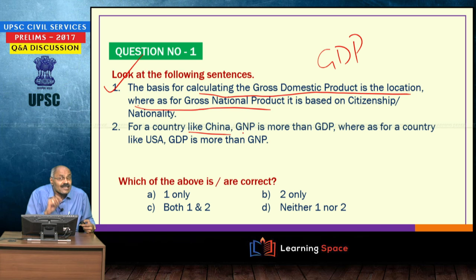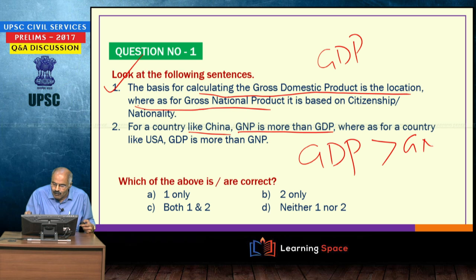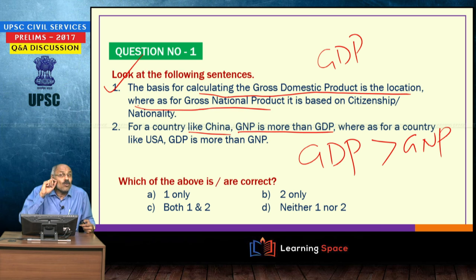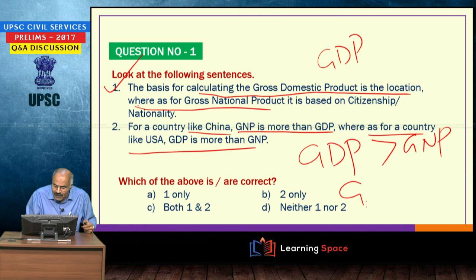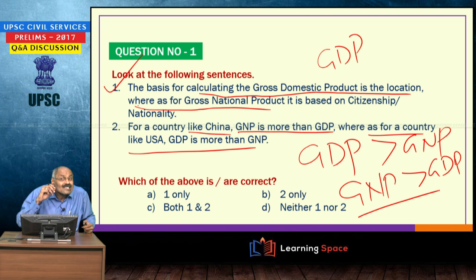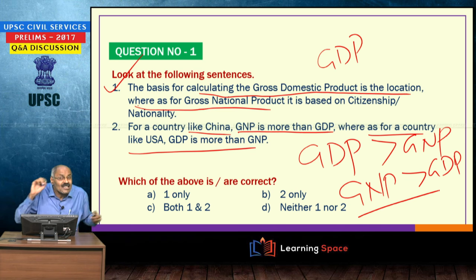For a country like China, GDP is more than GNP because several multinational companies established their manufacturing bases on the coastal areas of China in the economic zones. For a country like the USA, GNP is greater than GDP because several multinational companies of America are establishing bases in several countries. This is a very important point.